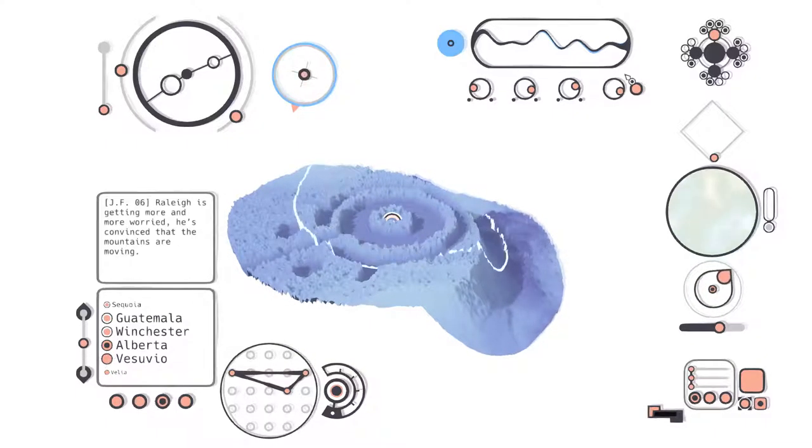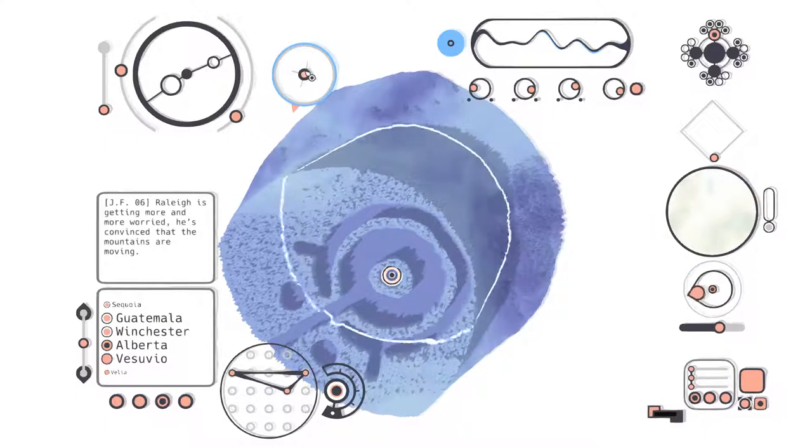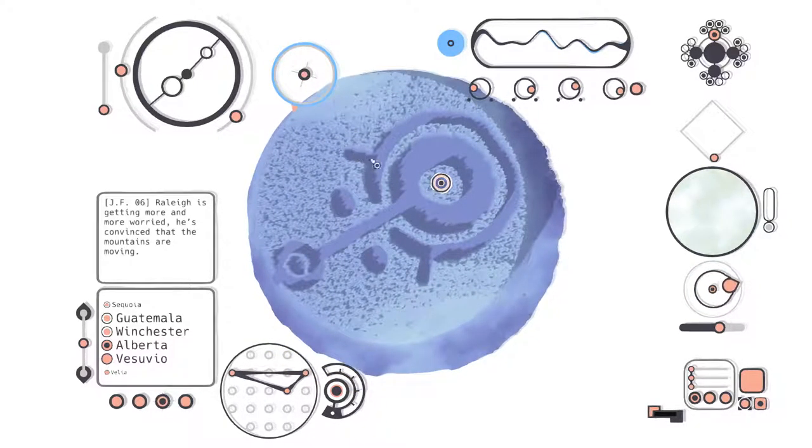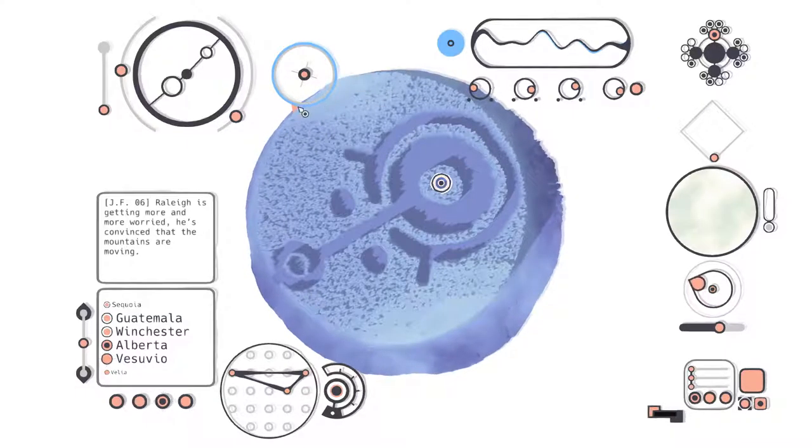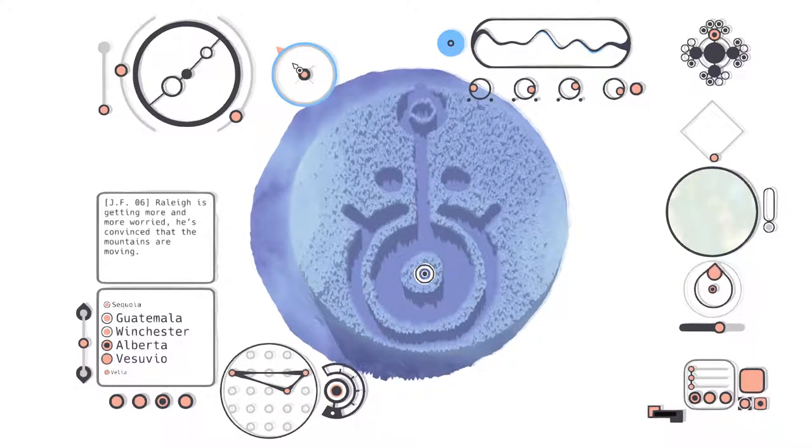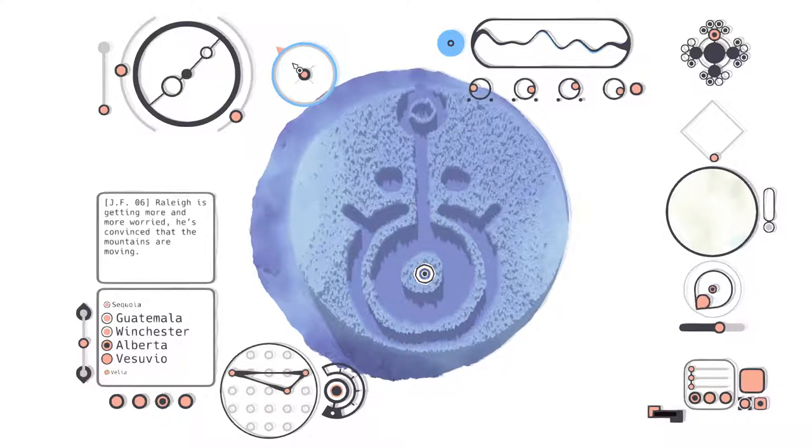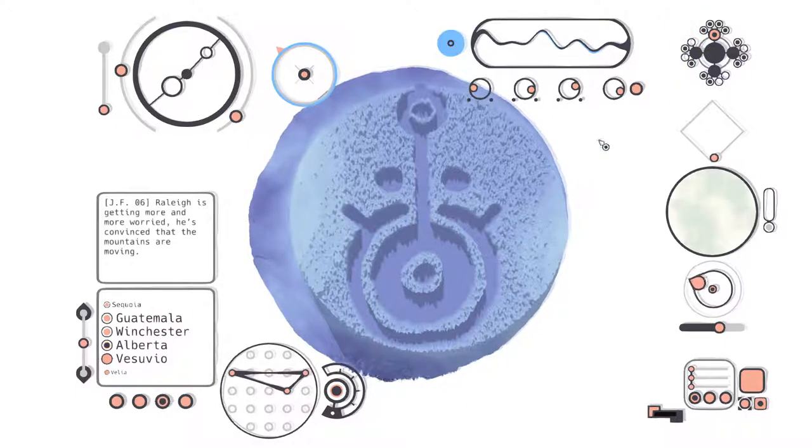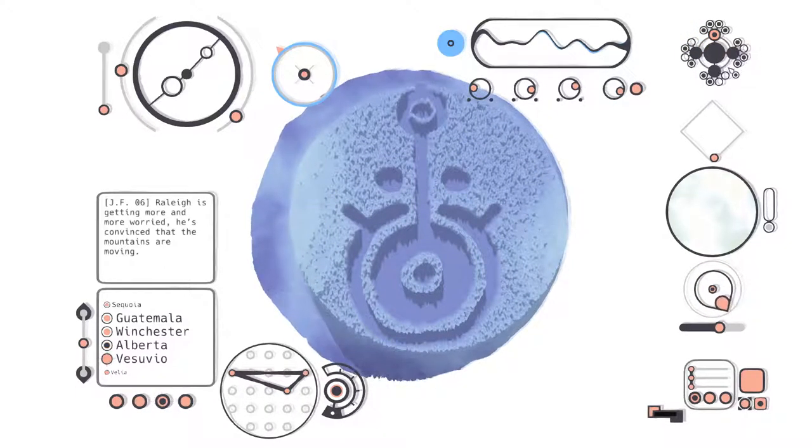What is this? Is this an Unown? It's an Unown! That's the, it looks like the eye Unown. Can I... oh you can. I guess it's like the exclamation point Unown. But yeah, that is definitely a Pokemon.